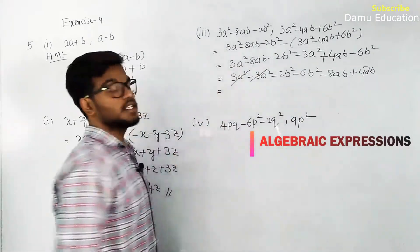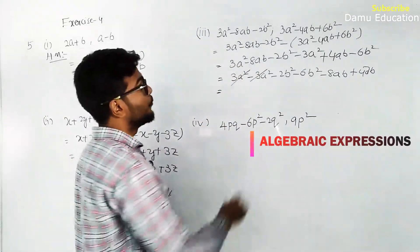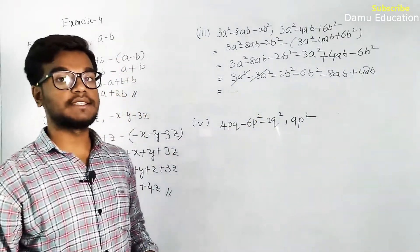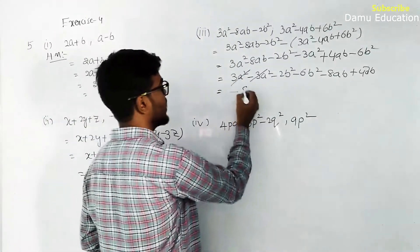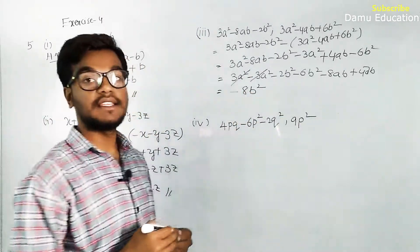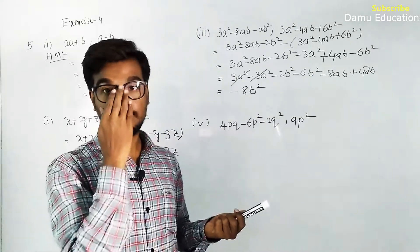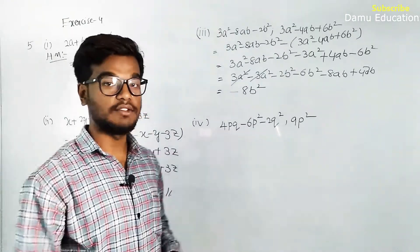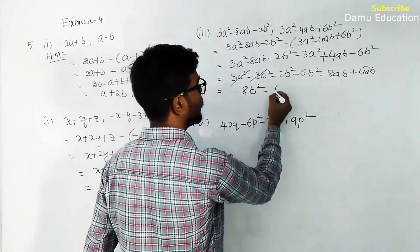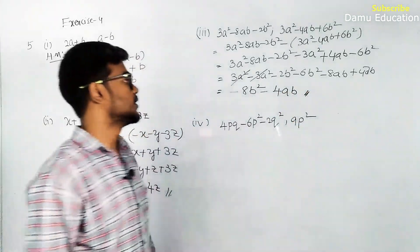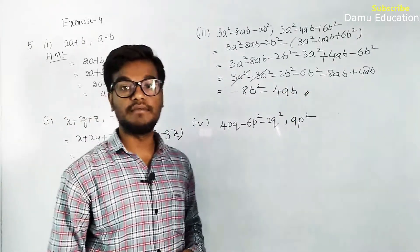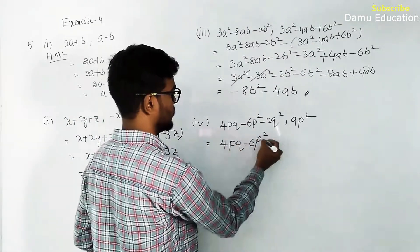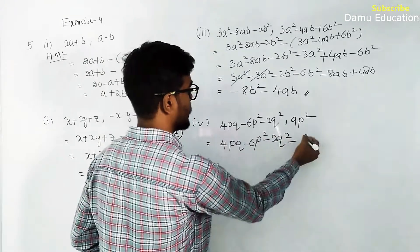So 3a squared minus 3a squared will cancel. Minus 2b squared minus 6b squared will become minus 8b squared. Minus 8ab plus 4ab: since the minus symbol is there, this becomes minus 4ab. So the answer is minus 8b squared minus 4ab.